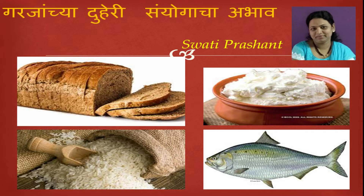One major problem was the double coincidence of wants. Without a double coincidence of wants, there would be no exchange of goods. This means both parties must want exactly what the other has to offer at the same time.